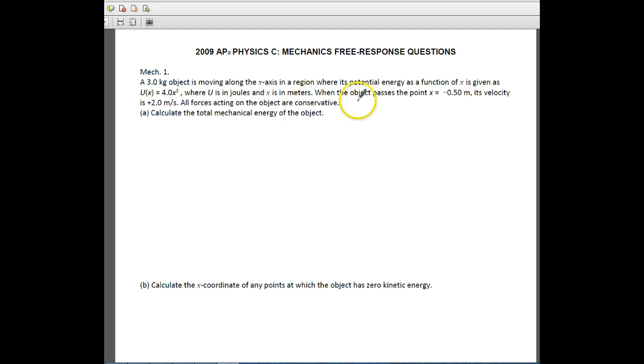U is in joules, x is in meters, so that's good. When the object passes at negative 0.5 meters, the velocity is positive 2 meters per second. All the forces acting on the object are conservative. And so remember, conservative just means that you don't lose any energy at all during this process. So there's no friction, there's no heat loss, that type of thing.